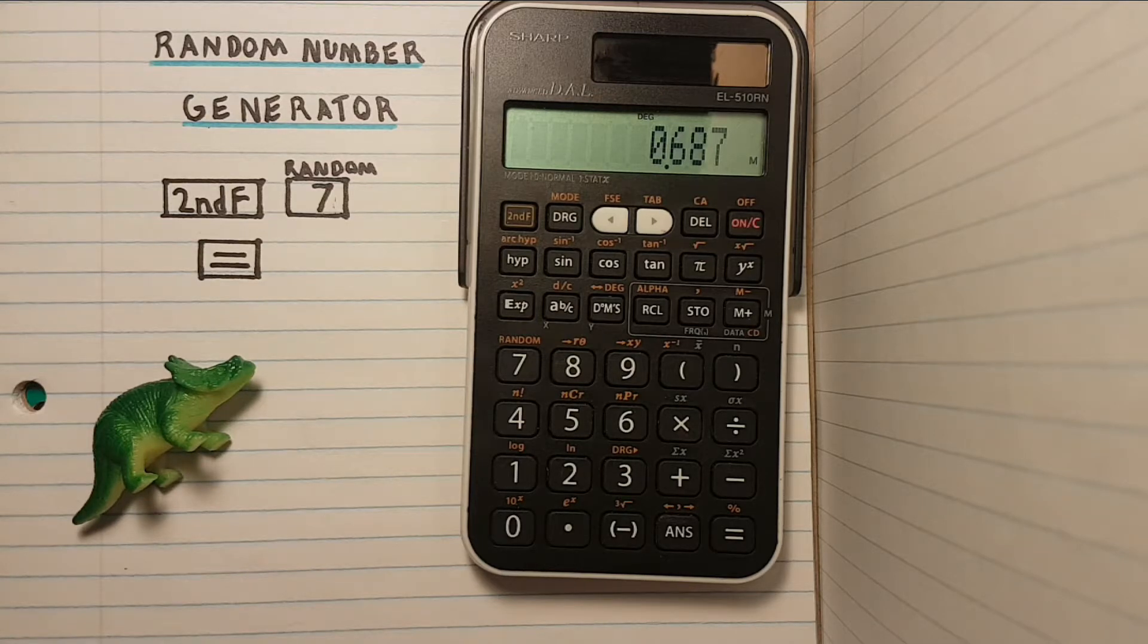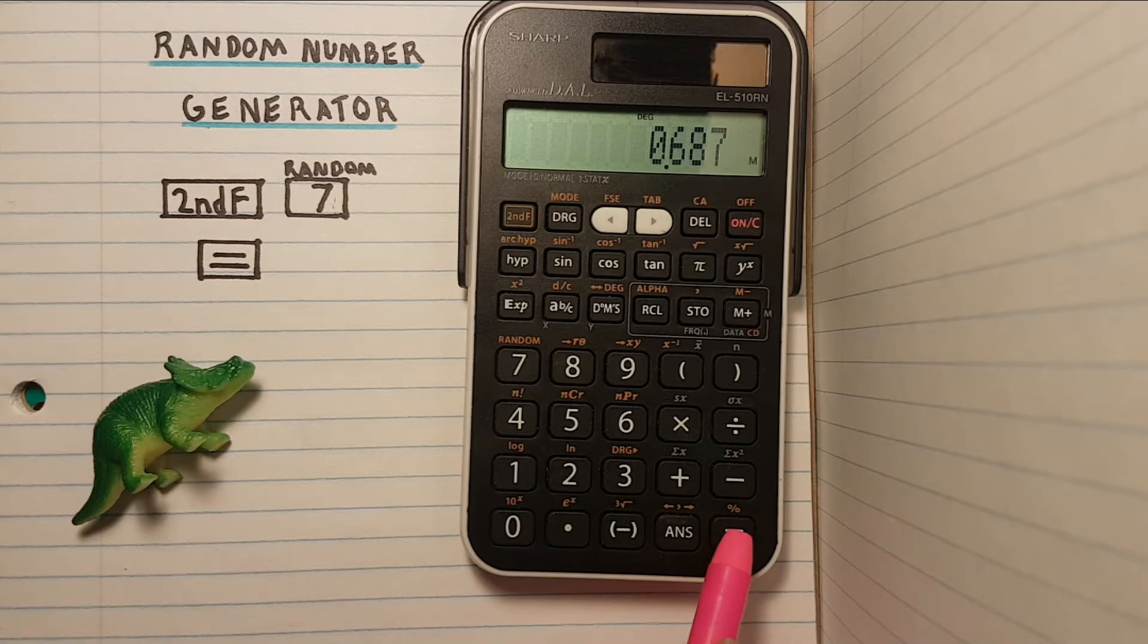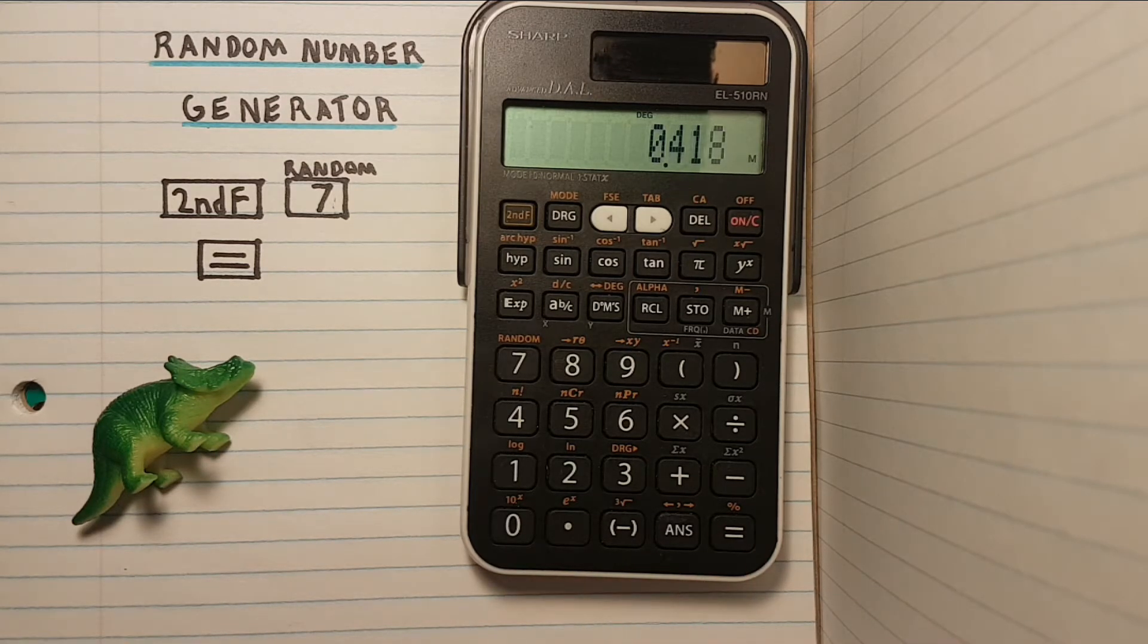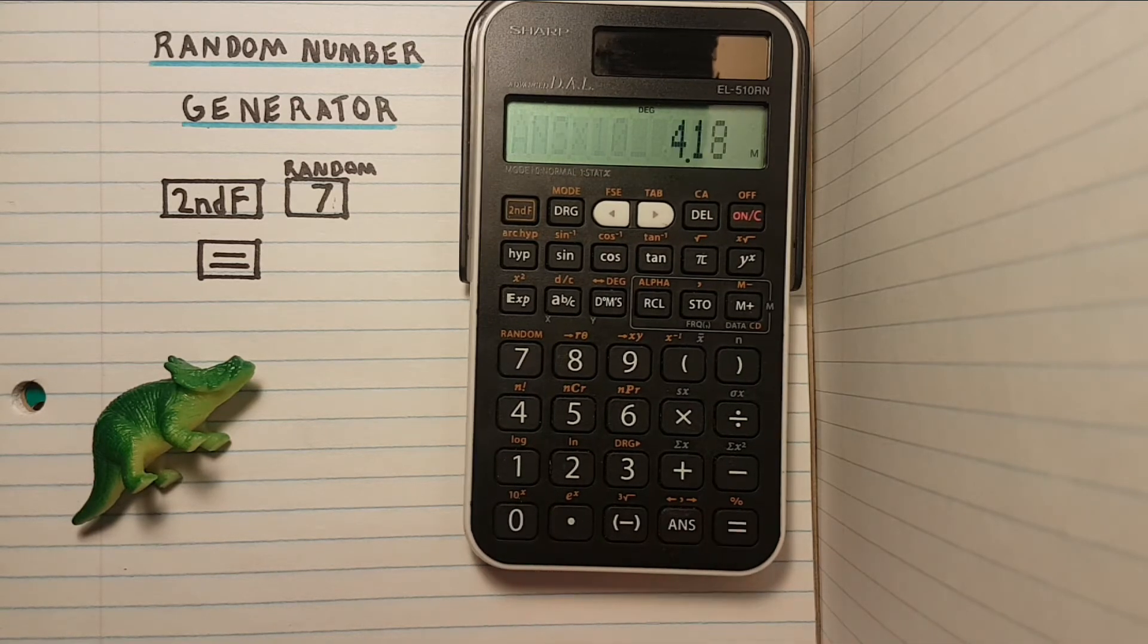Unfortunately this function only produces a decimal but we can tweak this if we require something different. Say we want a random number between 1 and 10. We could generate our decimal and multiply it by 10 and round accordingly.